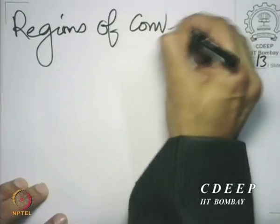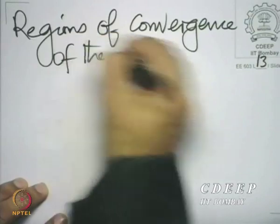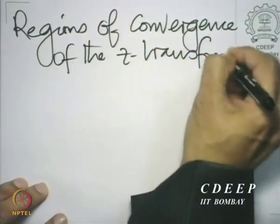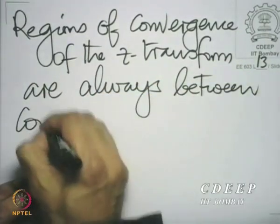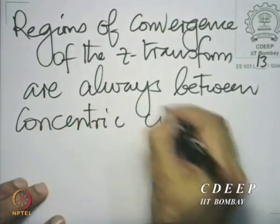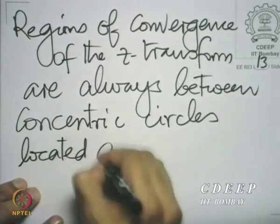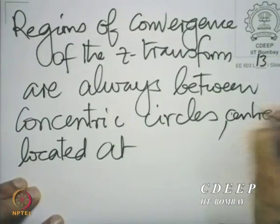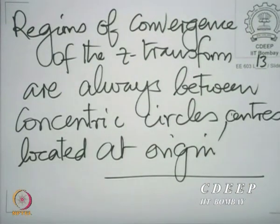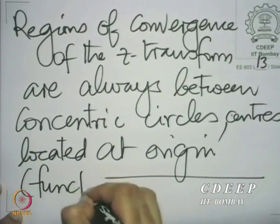That is a very important observation: regions of convergence of the z transform are always between concentric circles with centers located at the origin. So, it is essentially a function of r, not of omega.